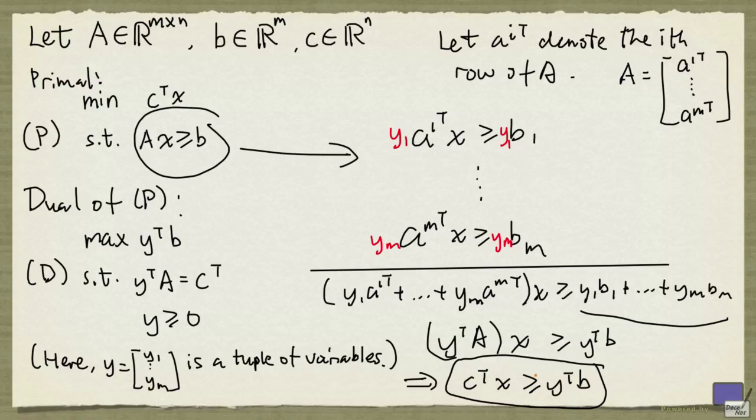So this inequality tells us that, if you have a feasible solution to p, its objective function value cannot be less than the objective function value of any feasible solution to d. This relationship is called weak duality.